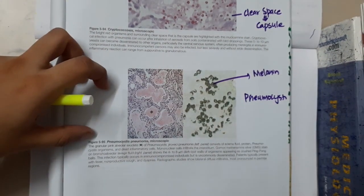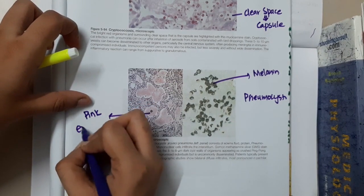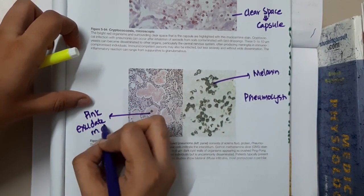This is Pneumocystis pneumonia, and this is pink exudate which is seen in the alveoli. This is pink exudate in alveoli.